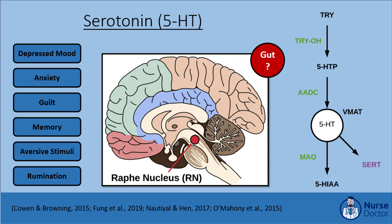One of the primary ways serotonin is degraded is by monoamine oxidase (MAO). Serotonin is broken down into 5-hydroxyindoleacetic acid (5-HIAA). Coincidentally, 5-HIAA concentrations are reduced in the CSF of patients with depression, and especially with suicidality, indicating a deficiency of serotonin in depression.